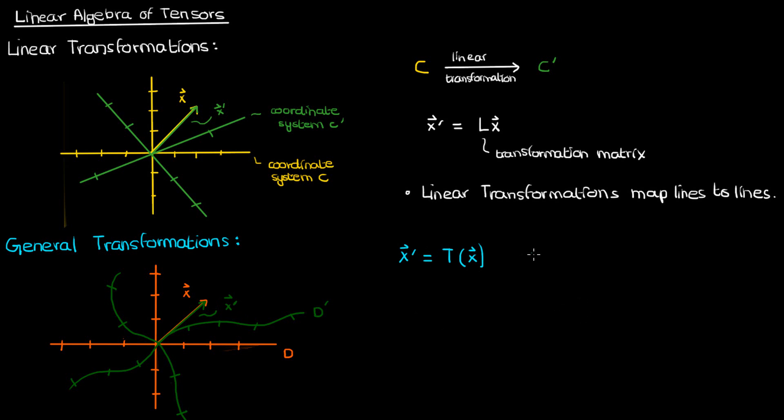You can also write this equation in terms of the components of X prime given by X prime I, in which case you would get the following. Where X prime I is in general a function Ti of all the components of the original vector X.